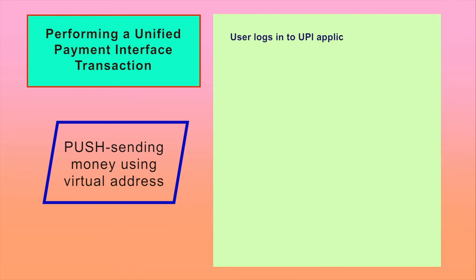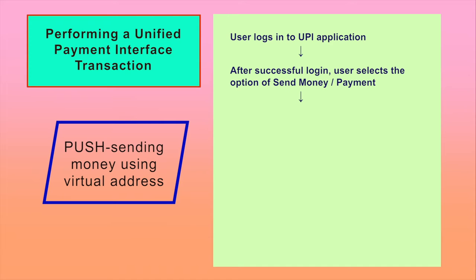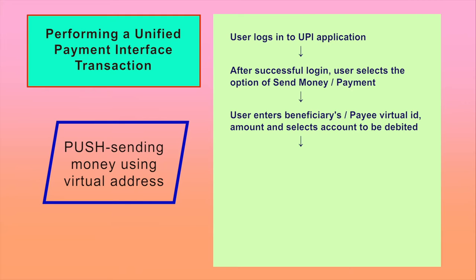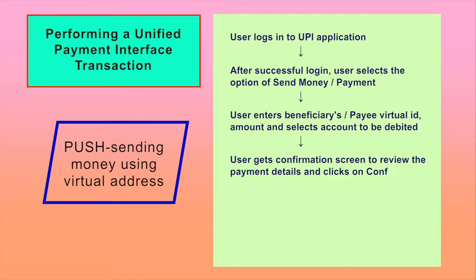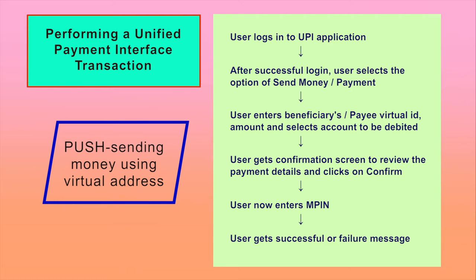Push — sending money using virtual address: The user logs into the UPI application. After successful login, the user selects the option of send money or payment, enters the beneficiary's or payee's virtual ID, amount, and selects the account to be debited. The user gets a confirmation screen to review the payment details and clicks on confirm. The user then enters the MPIN and gets a successful or failure message.